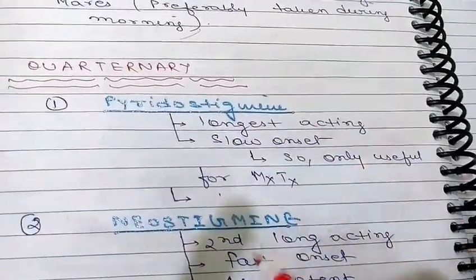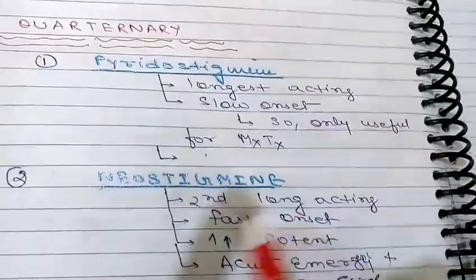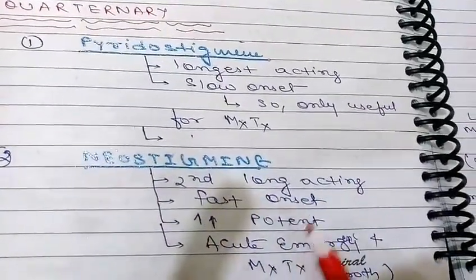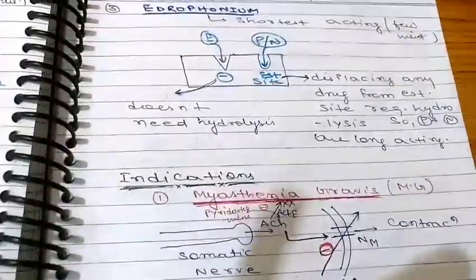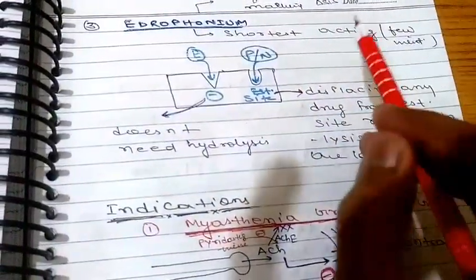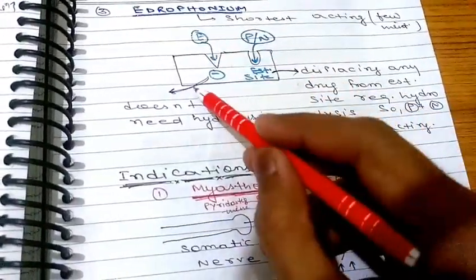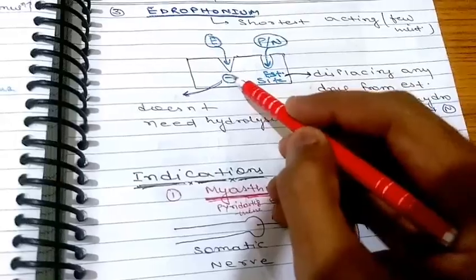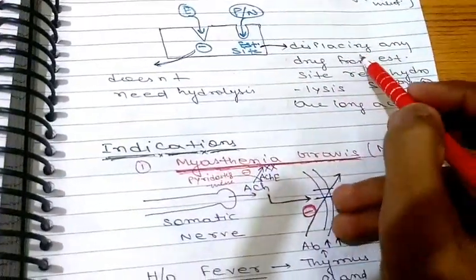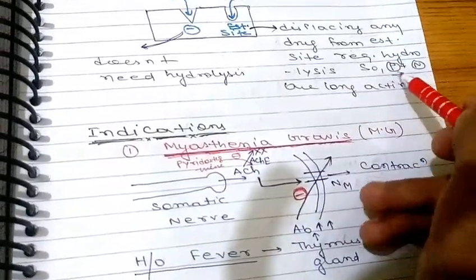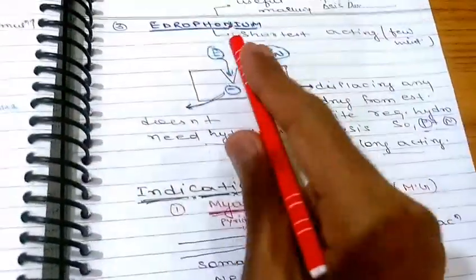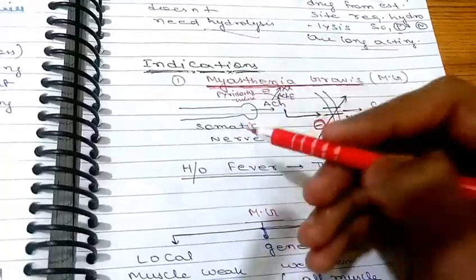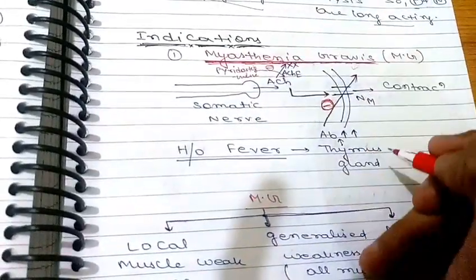The first quaternary drug is pyridostigmine — the longest acting with a slow onset, so it is only useful for maintenance treatment. The next is neostigmine — the second longest acting with a fast onset and more potency, so it is used for both acute emergencies and maintenance. The next is edrophonium — the shortest acting drug, useful for making a diagnosis. Mechanism: edrophonium binds to the anionic site, while neostigmine and physostigmine bind to the esteratic site. Displacing a drug from the esteratic site requires hydrolysis, making physostigmine and neostigmine long-acting; displacing from the anionic site does not require hydrolysis, so edrophonium has a very short action.